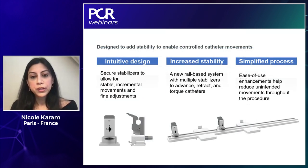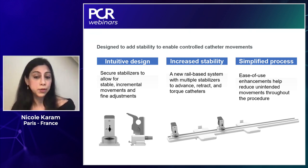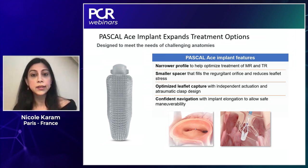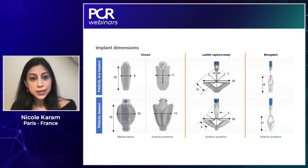What is also new is the change in the device stabilizer. We now have a stabilizer using a rail-based system, with multiple stabilizers that will be implanted on the same rail system. It allows increased stability and is optimal for single operator use. The Pascal ACE has a narrower profile, so it's easier to navigate with. It has a smaller spacer and still has the possibility of separate grasping, which allows us to take one leaflet at a time or to optimize if needed.